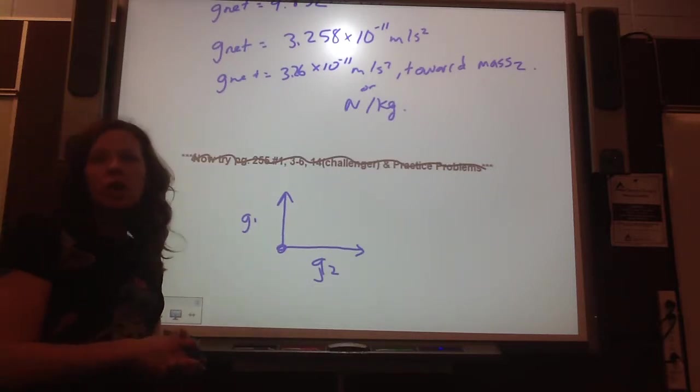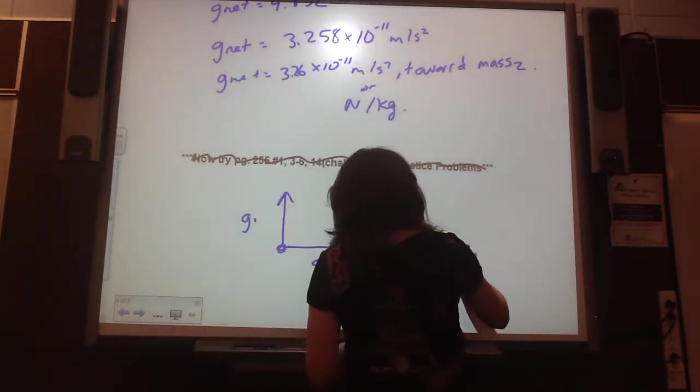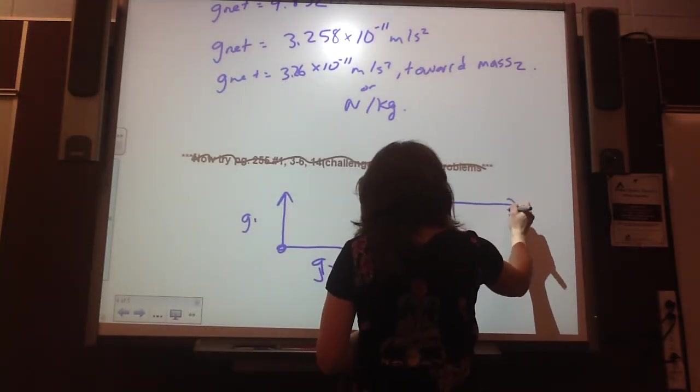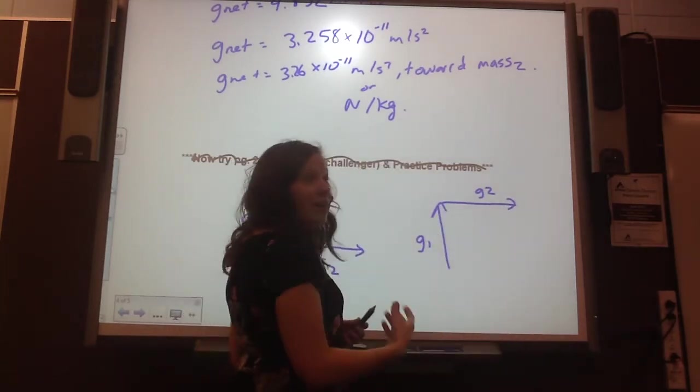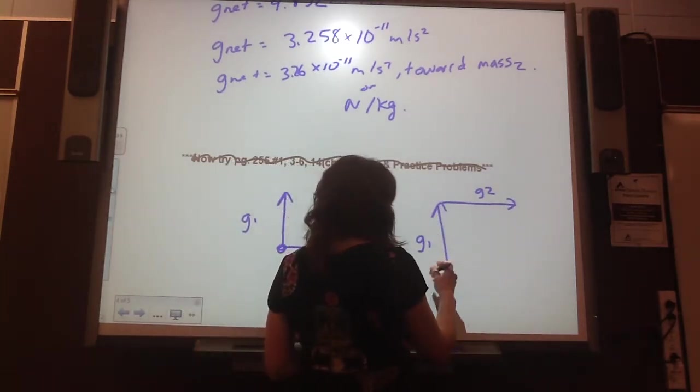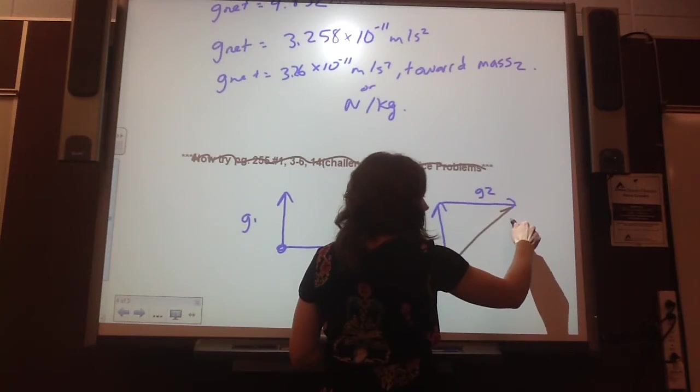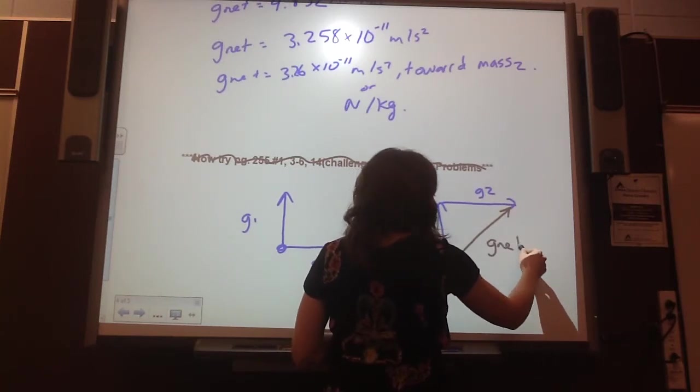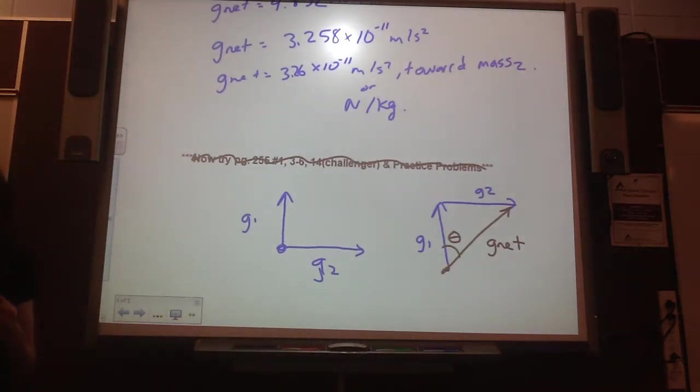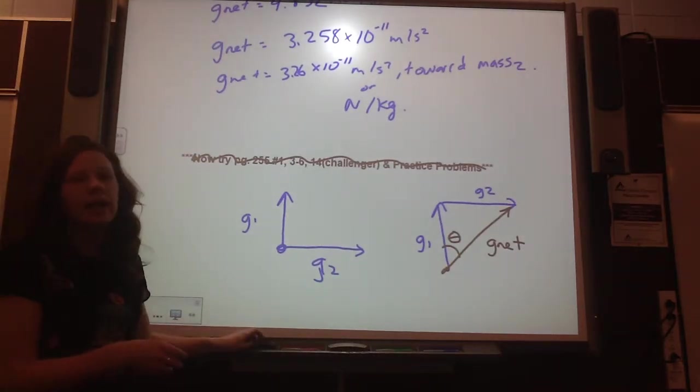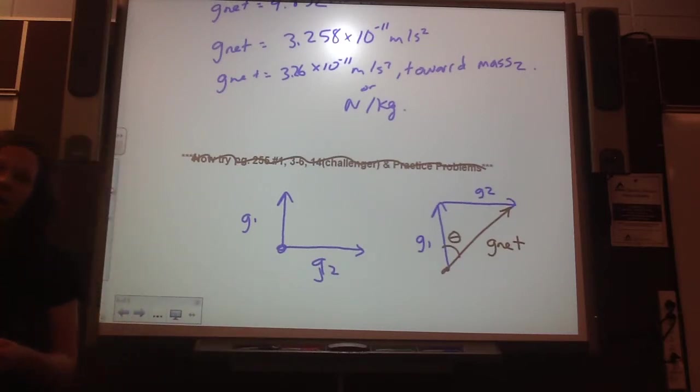Okay, so you rewrite these like a vector. So that means you need to draw them tip to tail. So you would redraw it like this: G1, G2. And then to find your overall net is from the start to the finish. So that would be G net, and you would need to find theta. So it's just like we would do in kinematics and our forces. So you'll need to redraw it once you find those two vectors.